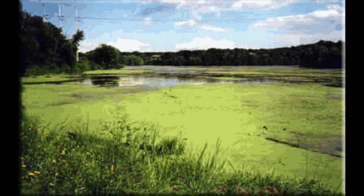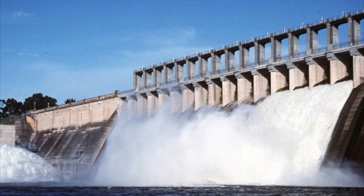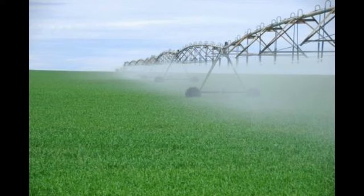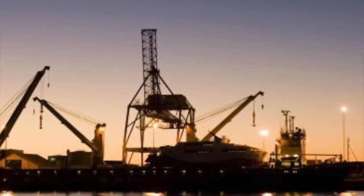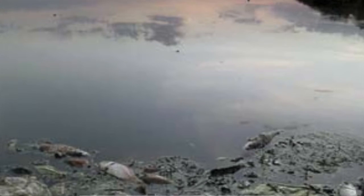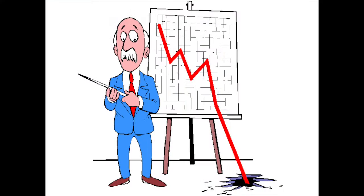Australian communities are also affected. Many farmers use water from the basin for irrigation for their crops, and water affected by eutrophication is not suitable for this. Although water eutrophication mainly affects the agricultural sector, it also has significant effects on urban and industrial communities, not to mention the effects it has on the economy, costing Australia approximately $240 million each year.